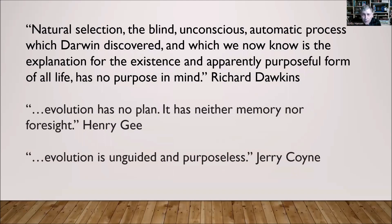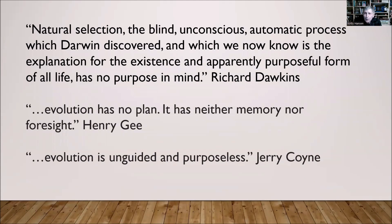Here are some interesting quotes from famous scientists committed to the evolutionary paradigm. Richard Dawkins says: 'Natural selection, the blind, unconscious, automatic process which Darwin discovered, and which we now know is the explanation for the existence and apparently purposeful form of life, has no purpose in mind.' Henry Gee says: 'Evolution has no plan. It has neither memory nor foresight.' And Jerry Coyne, who wrote Why Evolution Is True, says that evolution is unguided and purposeless.